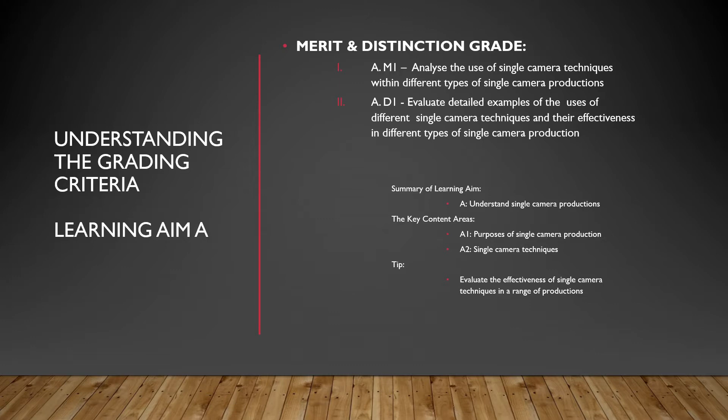The summary of this learning aim is basically to show an understanding of single camera productions, and you need to produce the evidence for exactly that. The key content areas are A1 — purposes of single camera production — and A2 — single camera techniques. Don't get them mixed up.